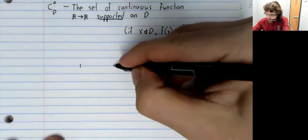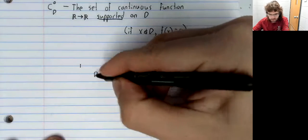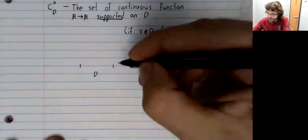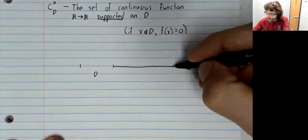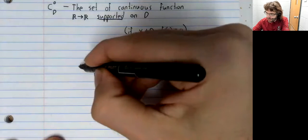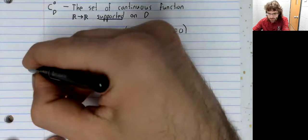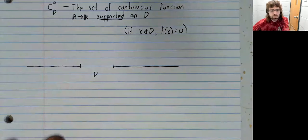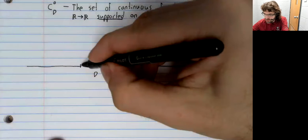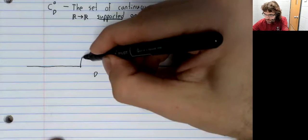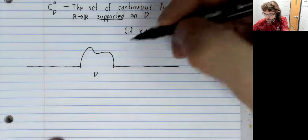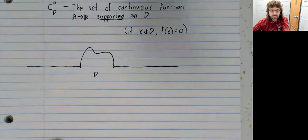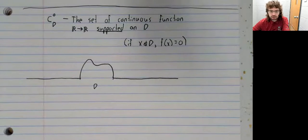So if D is this interval, let's say the function is defined everywhere, but outside of D it's always zero. It's only in this interval that the function can be non-zero.